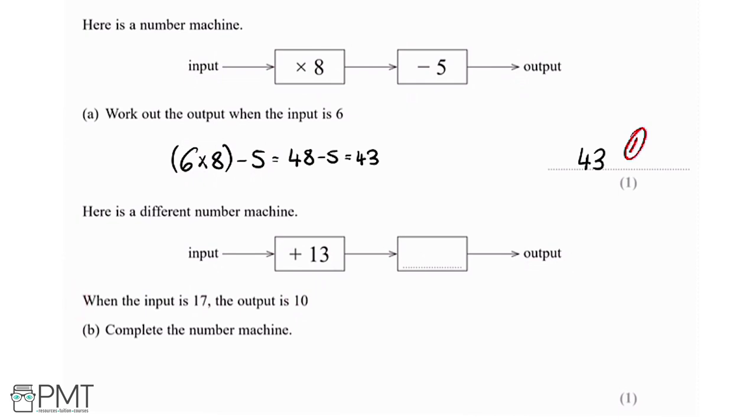So using the input they've told us, we're going to have 17 plus 13, and we've got some mystery operation here, and that's going to equal 10. So if I do 17 plus 13, that's 4, and then we've got our mystery operation here, and that equals 10.